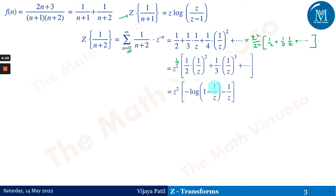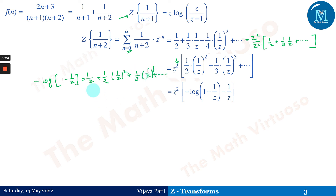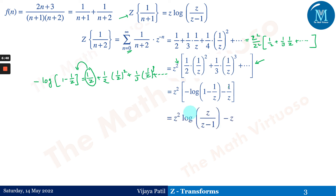This series resembles -log(1 - 1/z) minus 1/z, because -log(1 - 1/z) = 1/z + (1/2)·(1/z)² + (1/3)·(1/z)³ + ..., and the 1/z term is absent from our series. So the Z-transform of 1/(n+2) becomes z²·[log(z/(z-1)) - z], which simplifies accordingly after adjustment.